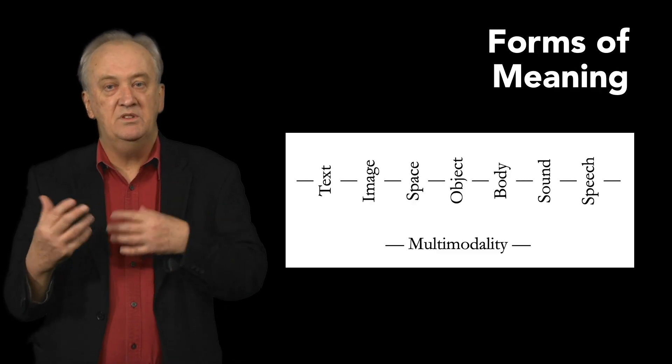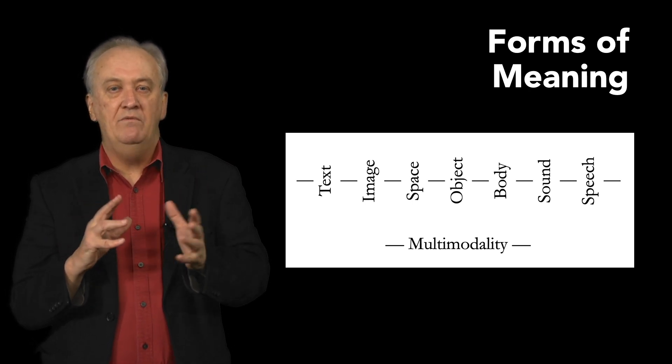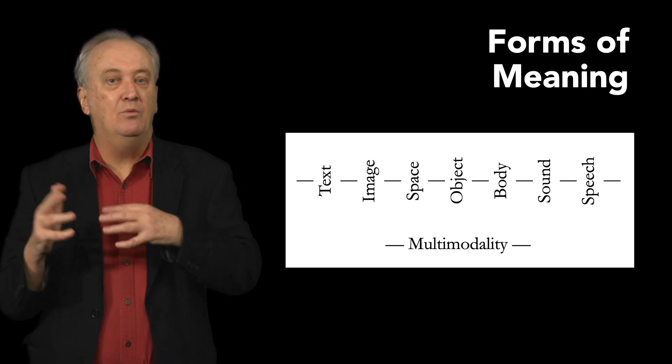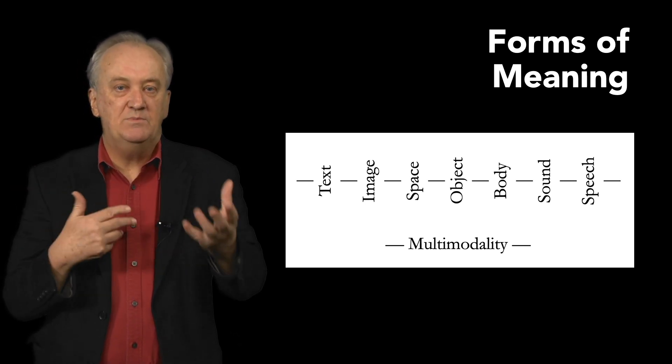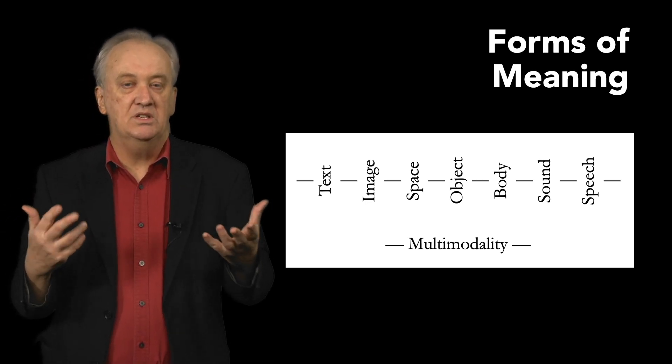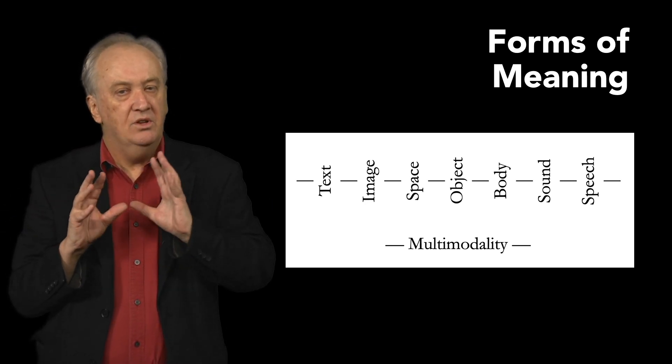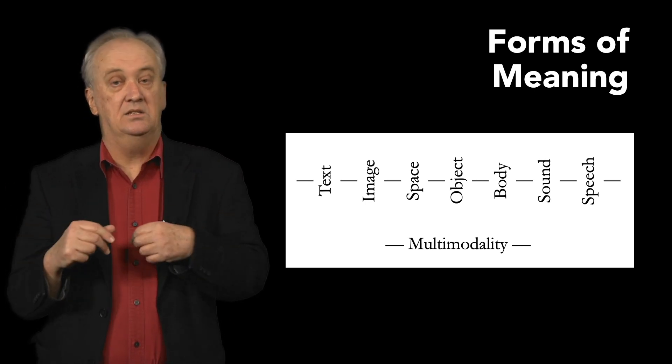These are the systems of meaning that we're going to be talking about. Barely ever does one form of meaning happen without one or more of the others. Always we find ourselves making transpositions from one form of meaning to another during the process of meaning. If one form is not enough, we supplement it with another in order to add sense to what we're saying.